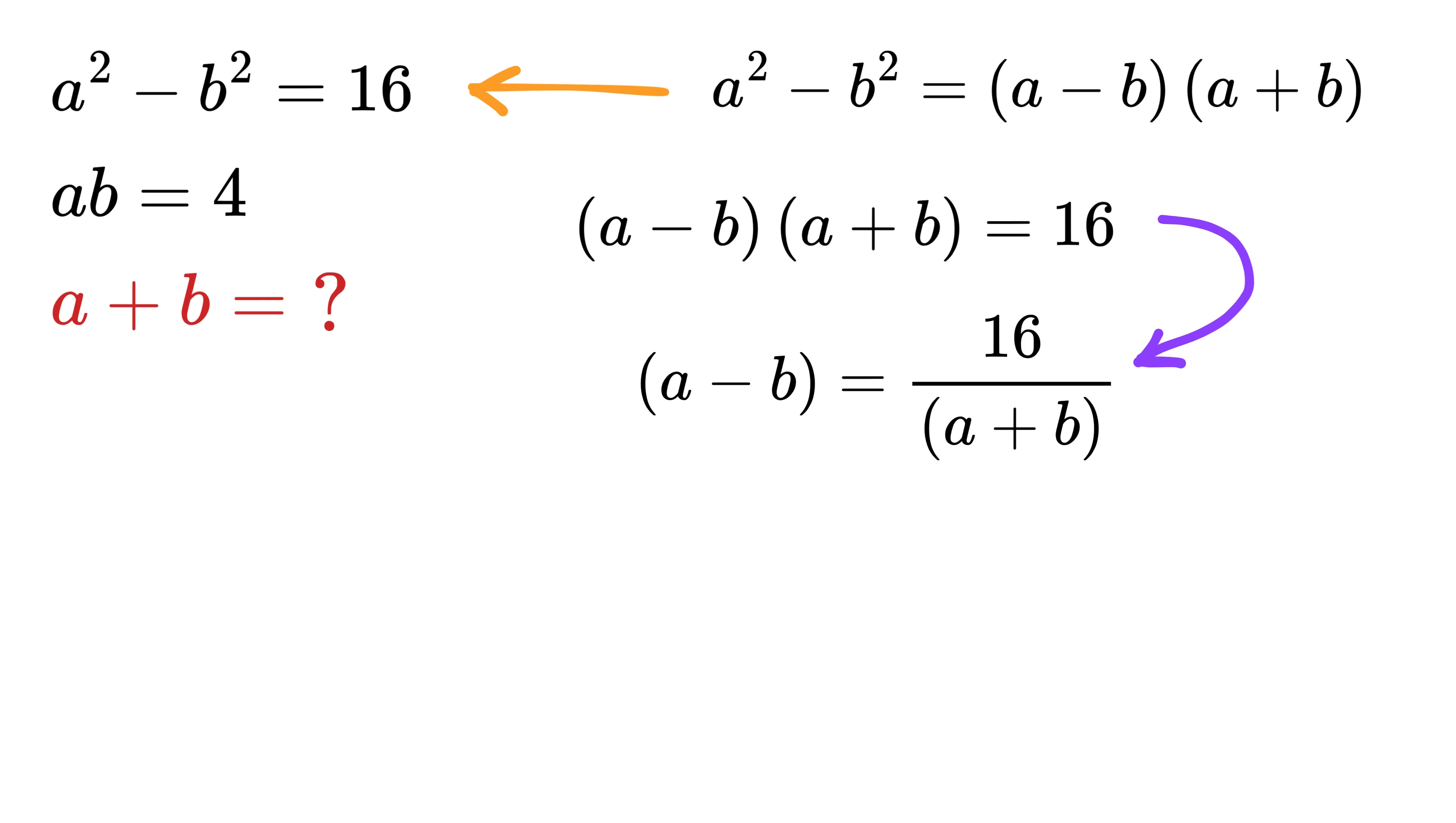Next, we will use another identity which is A minus B whole square is the same as A plus B whole square minus 4 times AB. Substitute A minus B as 16 over A plus B here to get this as 16 over A plus B whole square. Also, substitute AB as 4 here to get this as 4 times 4 or 16. This will become 16 squared over A plus B whole square or 256 over this.